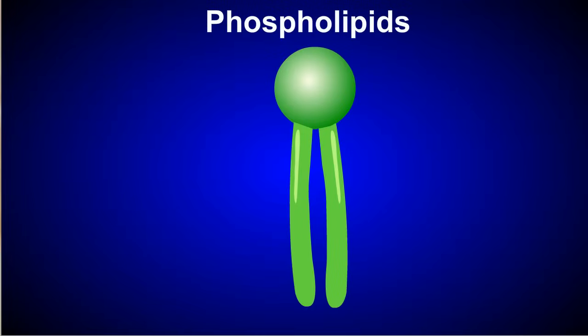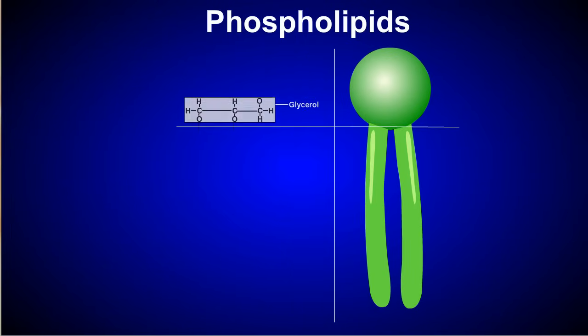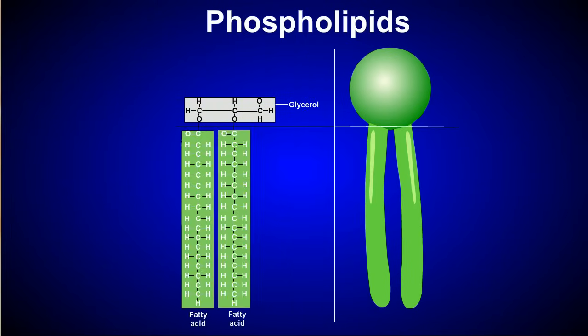Cell membranes are primarily made of phospholipids, which are large lipid molecules, similar to triglycerides. Like triglycerides, they contain glycerol and fatty acids, but they differ from triglycerides in that they have a phosphate group, rather than a fatty acid, attached to the third carbon of glycerol.